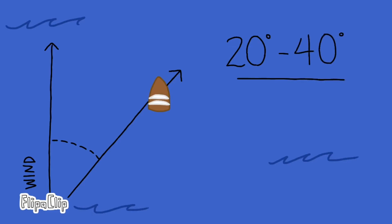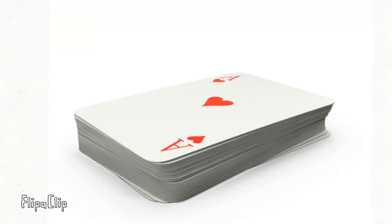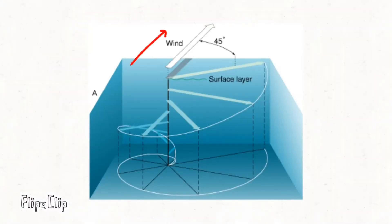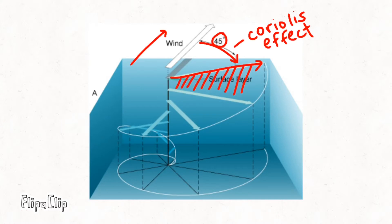But there's even more below the surface. Imagine water as a bunch of layers stacked on top of each other like a deck of cards. Say we're in the northern hemisphere and the wind blows in this direction. Because of the Coriolis effect, the surface layer is going to move to the right by about 45 degrees. But that surface layer also pulls on the layer beneath it, the same way the wind initially pulled on that surface layer. Except, because some of the energy was lost, it pulls with just a little bit less strength.